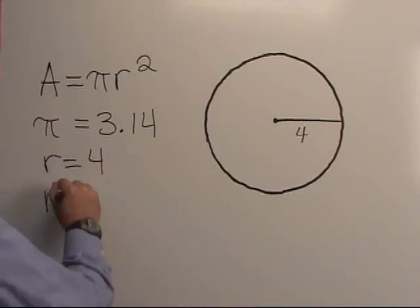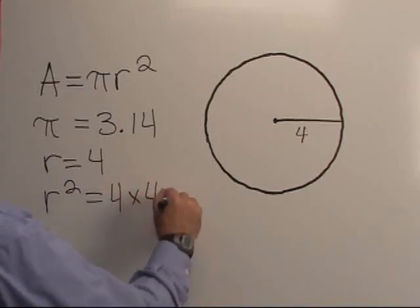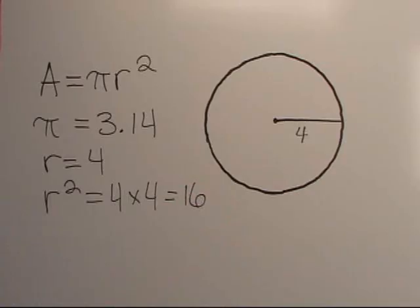Therefore, r squared equals 4 times 4, or 16. Now we have all the information we need to solve the equation.